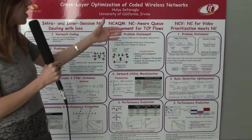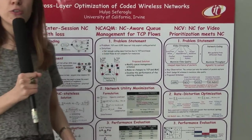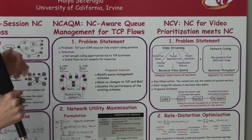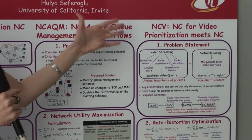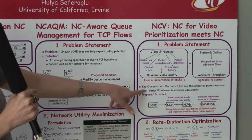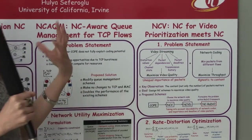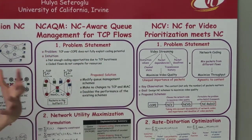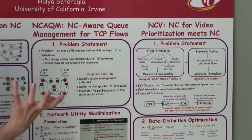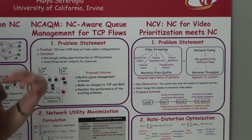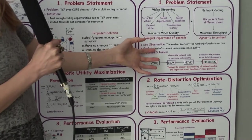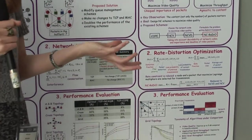First is the joint optimization of network coding and video. When we consider video transmission, the key observation is that the content of the packets — not only the number of packets — is important. Normally in network coding, the goal is to improve throughput, but here the goal is to improve video quality.